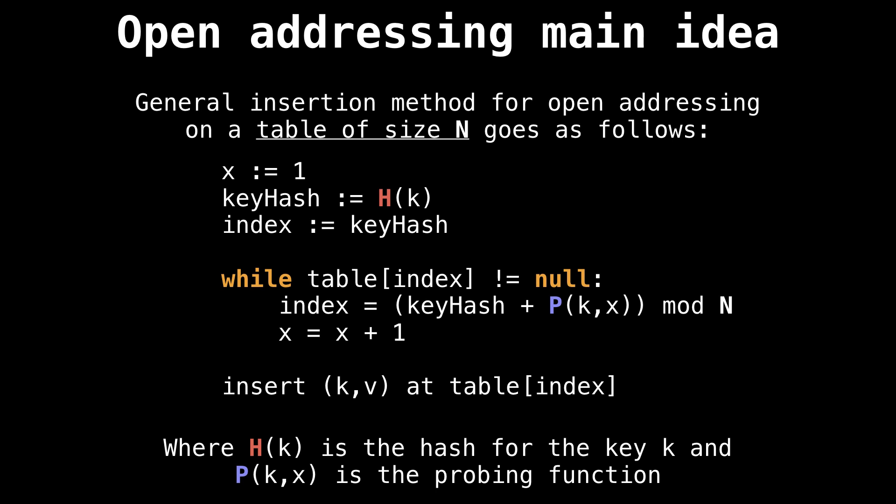While the table index is occupied, meaning it's not equal to null, we're going to say our new index is the key hash, or the original position, we hash to plus the probing function mod N, so that we always land back inside the table. And then we're going to increment x.